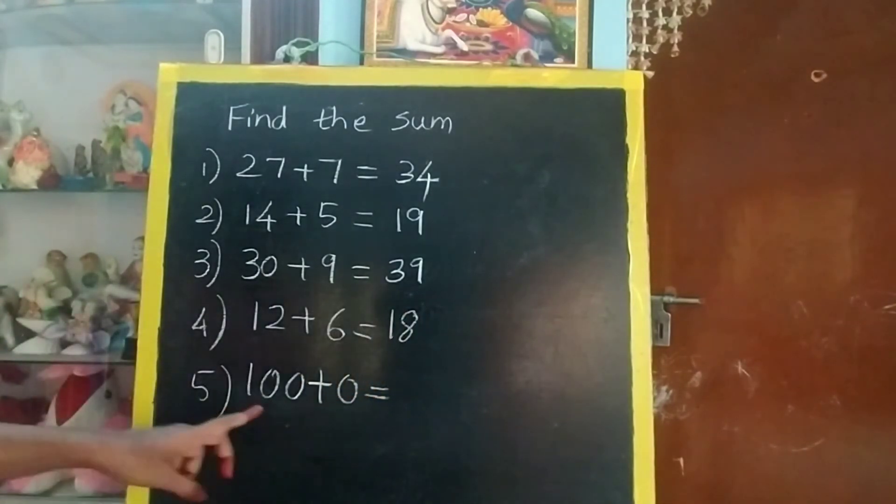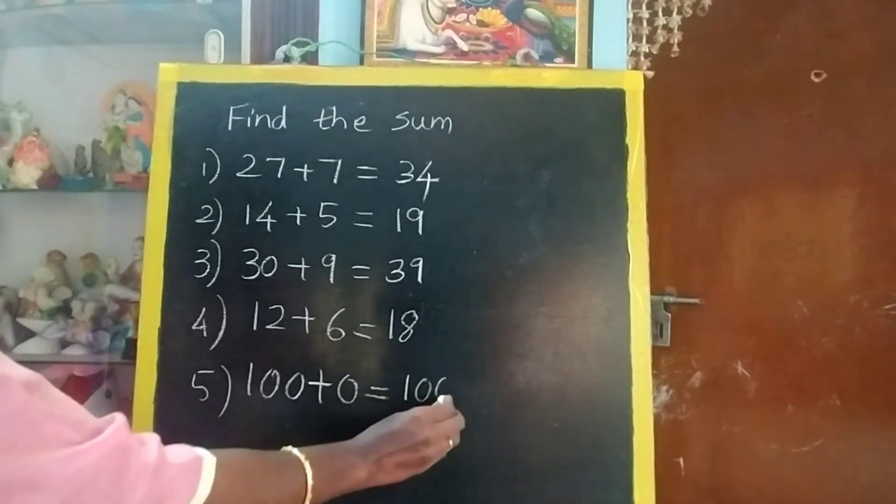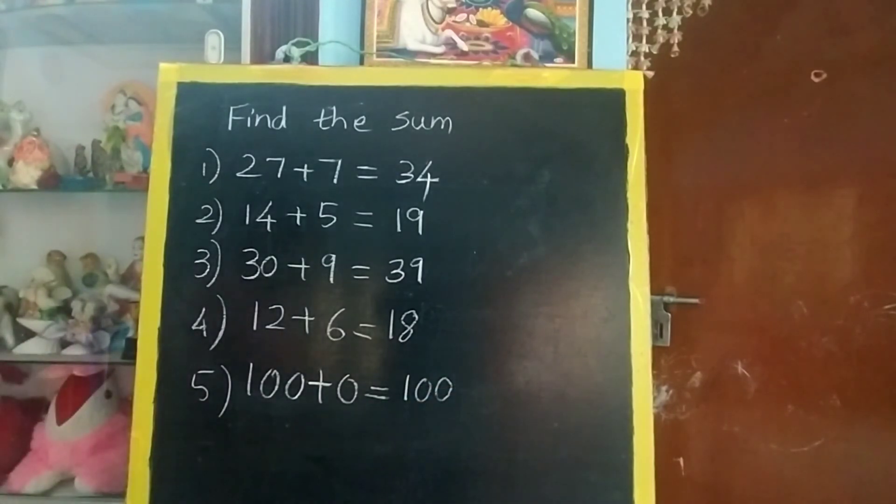Now 100 plus 0. Any number added with 0, you will get the same number. So 100. For 0, you need not add. So do neatly one below the other, you have to do.